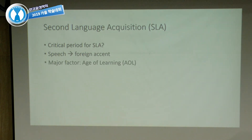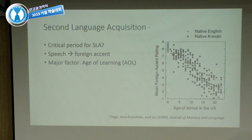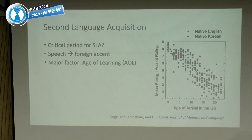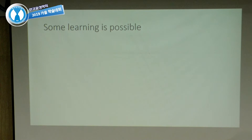Many studies have been done on that. One of your keynote speakers two years ago was Jim Flege, who has extensively researched this. One major factor is the age of acquisition. Here is one study looking at Korean learners of English who had moved to the United States. On the horizontal axis is their age of arrival in the US; on the vertical axis is their mean foreign accent rating, with 9 being completely native-like and 1 being strongly accented.